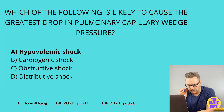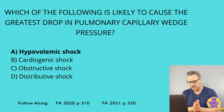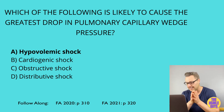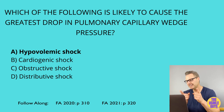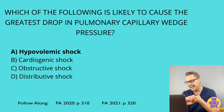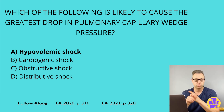Our final type of shock is called distributive shock, also known as vasodilatory shock, and this includes underlying causes like anaphylaxis, CNS injuries, and they lead to vasodilation that decreases blood flow to the major organs. If the cause of shock is anaphylaxis or sepsis, look for warm skin, a drop in PCWP, and a drop in afterload, but an increase in cardiac output. On the other hand, if the underlying cause is a CNS injury, look for dry skin, a drop in PCWP, a drop in cardiac output, and a drop in afterload.